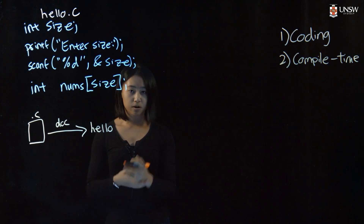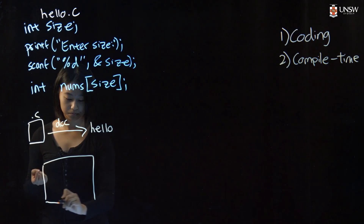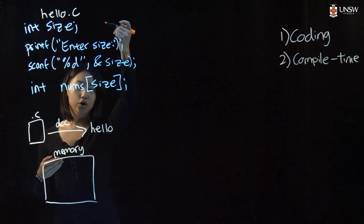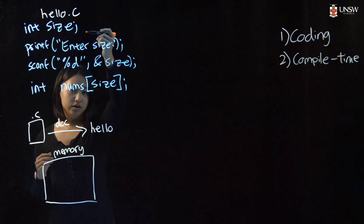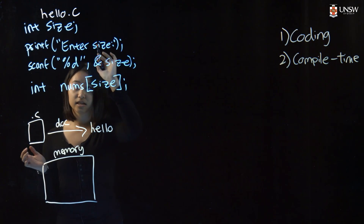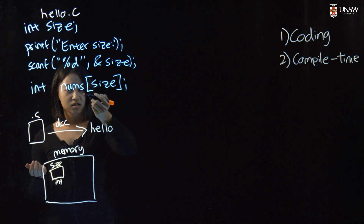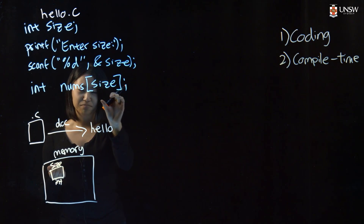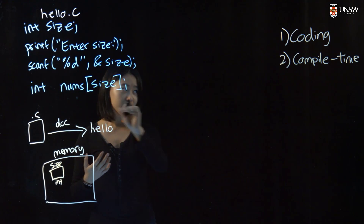During that compilation process, what DCC does is it goes into memory — this is the memory of your computer — and it looks at your code and allocates space for all of the variables that you've declared. So once it gets to the int size declaration, it'll say: you wanted an integer variable called size, I'll allocate some space for one integer. Then it gets to the array declaration and says: you want an array called nums of size size. But how big is size? We don't actually have a value for this variable until our third phase.